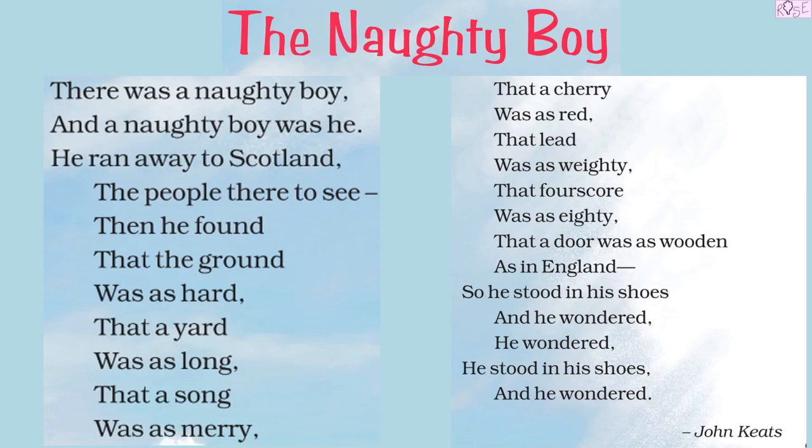As we discussed in the previous video, this poem is about a naughty boy who ran away to Scotland from England to see the difference between both places. But to his amazement, he saw that everything is the same. People are same, ground is as hard, yard is just as long, a song was as merry, the cherry was red, lead has the same weight, four score was still eighty, and all the doors were as wooden as in England. So he stood in his shoes and started wondering that everything is same in both places.